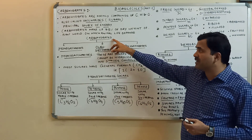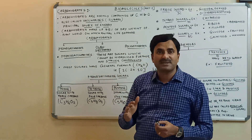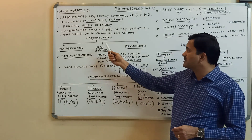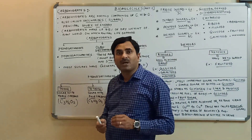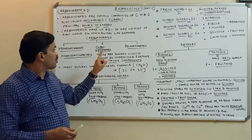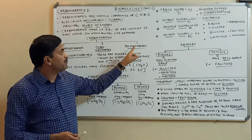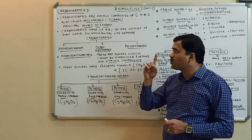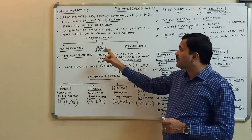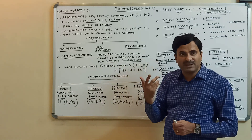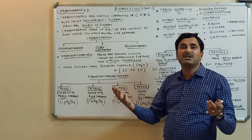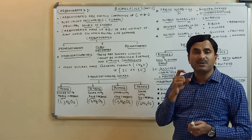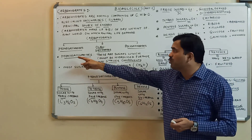Carbohydrates are classified into three categories: monosaccharides, oligosaccharides, and polysaccharides. 'Mono' means one, 'oligo' means few, and 'poly' means many. So monosaccharides are single sugars, oligosaccharides are made up of few sugar units, and polysaccharides are made up of many sugar units.